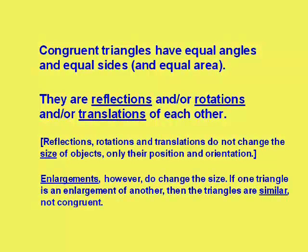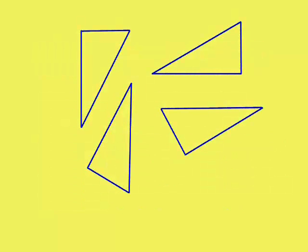Enlargements do have an effect of changing the size so on the whole enlarged triangles are not congruent. They are similar but not congruent. Let's have a look at some examples of congruent triangles. All four of these triangles have equal sides and equal angles.